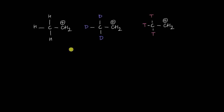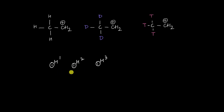Isotopes, if you remember, are basically different atoms of the same element. Hydrogen has three isotopes: hydrogen-1, hydrogen-2, and hydrogen-3. All of these have the same number of protons, the same atomic number, and as you know, atomic number gives the chemical signature of a particular atom. So because all three have the same atomic number, all of these are essentially hydrogen atoms.